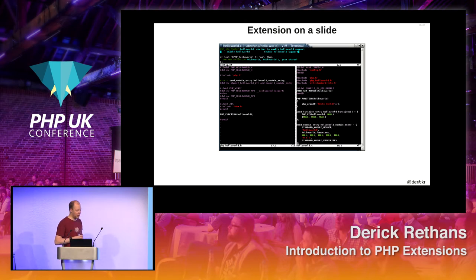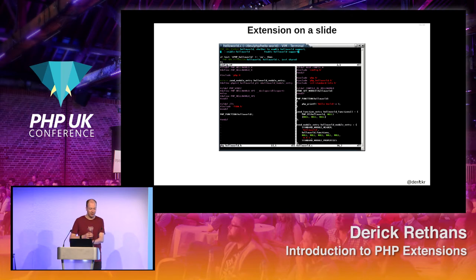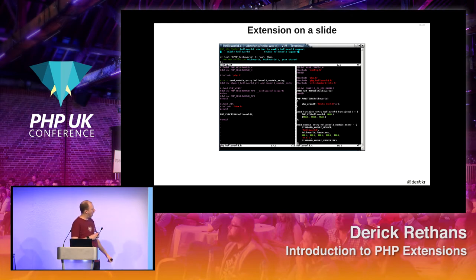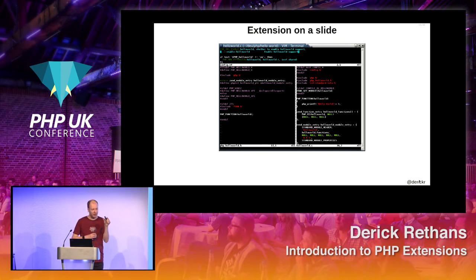The smallest extension you can probably get away with is about this size — about 100 lines of code in total. This is the most minimal extension that implements a function called hello world and shows hello world on the screen. I mean, you need to start with something.